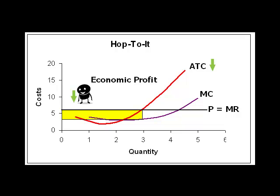The profit-maximizing output of three units and the price haven't changed. Juan is now profitable. A subsidy shifts the ATC curve down.